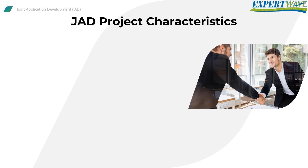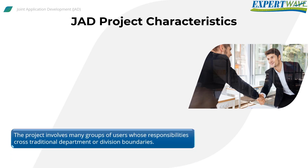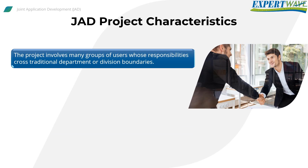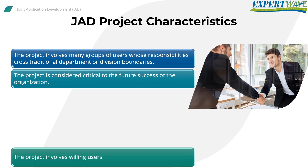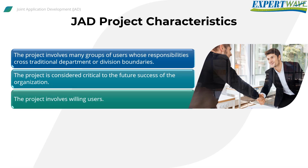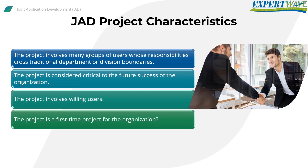An appropriate project exhibits at least some of the following characteristics that will benefit from JAD. The project involves many groups of users whose responsibilities cross traditional department or division boundaries. The project is considered critical to the future success of the organization. The project involves willing users. The project is a first-time project for the organization.